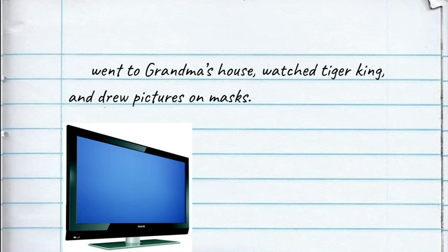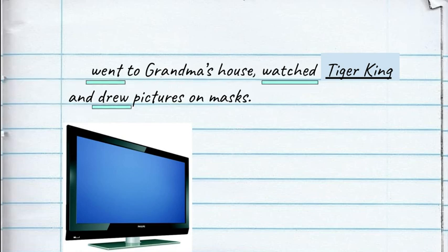Went to grandma's, watched Tiger King, and drew pictures on masks. I hope this isn't the beginning and end of your 'How I Spent the Summer of 2020' essay. Even bad television series names need to be capitalized. There are plenty of verbs happening here, so we're good for a predicate — but who did these things? When you're writing about yourself, don't forget to include yourself: 'I went to grandma's, watched Tiger King, and drew pictures on masks.'